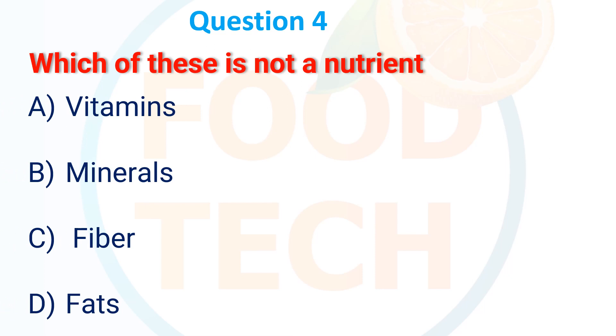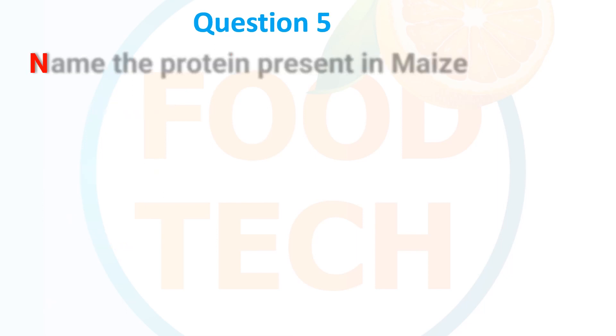Question 4: Which of these is not a nutrient? A. Vitamin, B. Minerals, C. Fiber, D. Fat. The answer is C. Fiber.